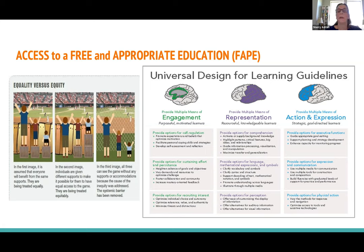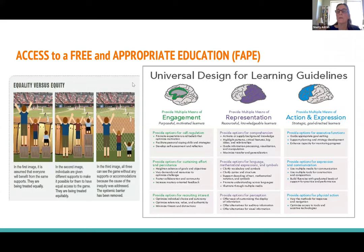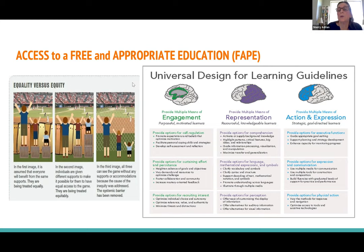UDL covers three primary brain functions. It talks about engagement: how do you make sure the kid is all in, excited, ready to go, focused and motivated to learn? Then how are you going to represent information — that is like input. How are you going to make sure the kids get the information? Do they have access to the knowledge, the concepts, the experiences you're providing? The third one is action and expression: how do the kids get to show you what they know, what they understand, and what they can do with that knowledge?